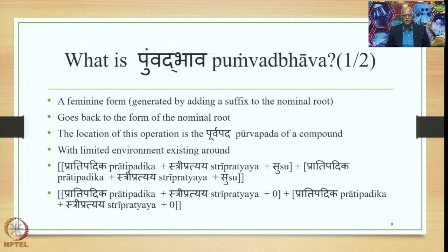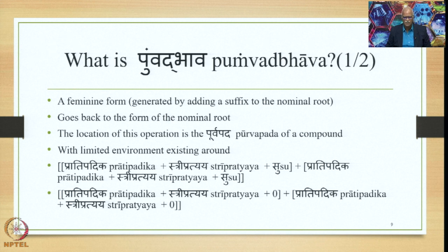The equation has Pratipadhika plus Stripratyaya plus Su as the first pada, and Pratipadhika plus Stripratyaya plus Su as the second pada — two Subantas that are interrelated. The sutra says the Pratipadhika should be Bhashita Pumsaka and the Stripratyaya should never be Oom. These are the two conditions on the Purvapada, and the Purvapada should also be co-referential with the Uttarapada. The Uttarapada also has the structure Pratipadhika plus Stripratyaya plus Su, with the Stripratyaya as the first condition and co-referentiality as the second.